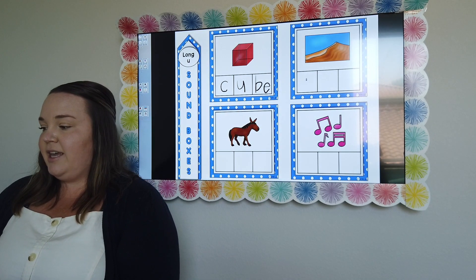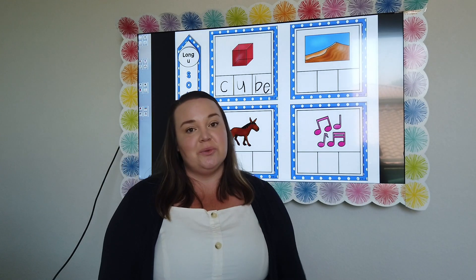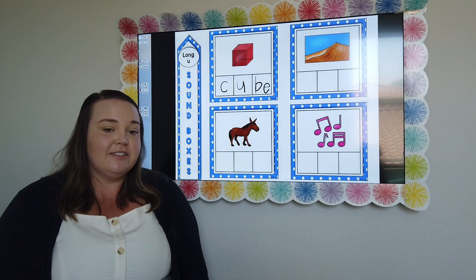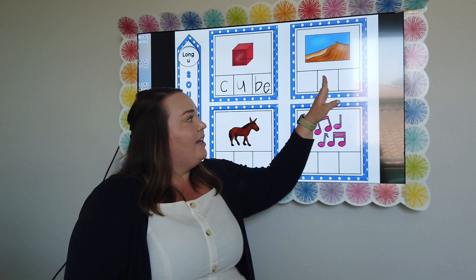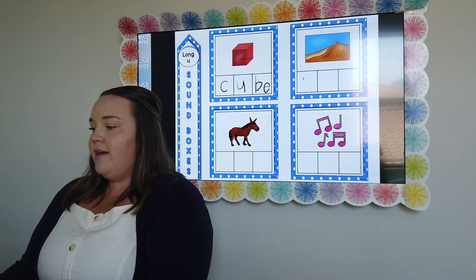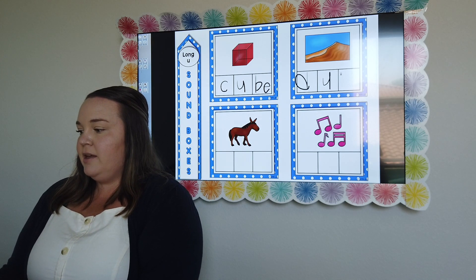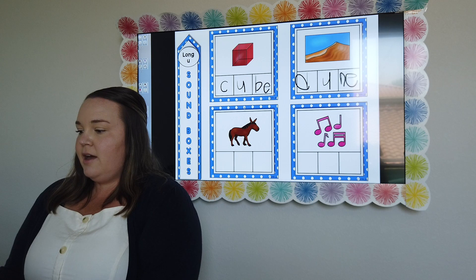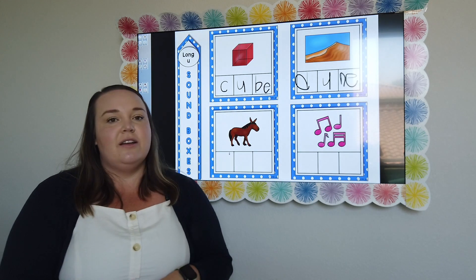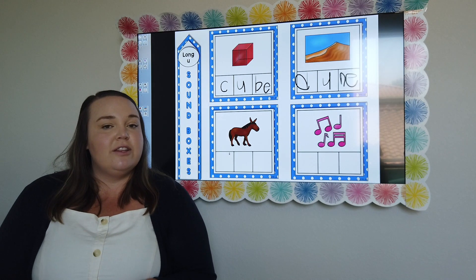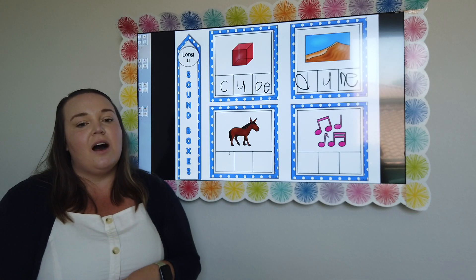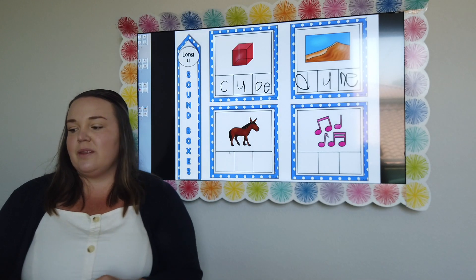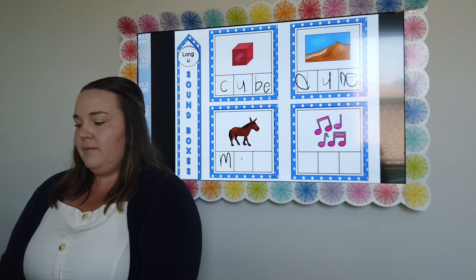Very different when you add that magic E. This one is a dune — do you hear that target sound? How many sounds do you hear? What letter makes each sound in dune? D-U-N, and we know we have magic E, otherwise it would be dun. This one down here is going to be a mule. Do you hear the target sound? How many sounds do you hear? What letters make each sound? M-U-L, magic E.